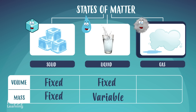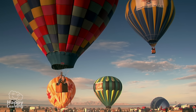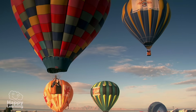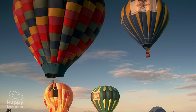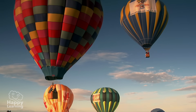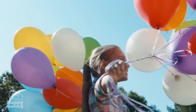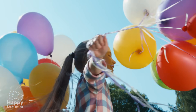Gas state is characterized by having a variable volume and size. In the same way that liquids take the shape of the container holding them, gases always occupy the full volume of the container.